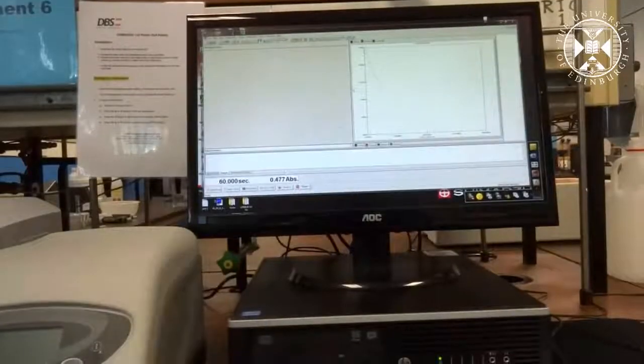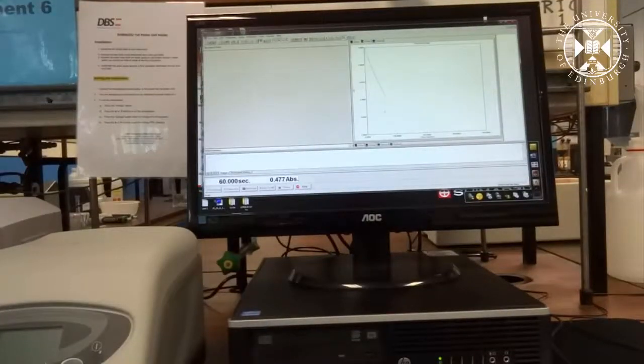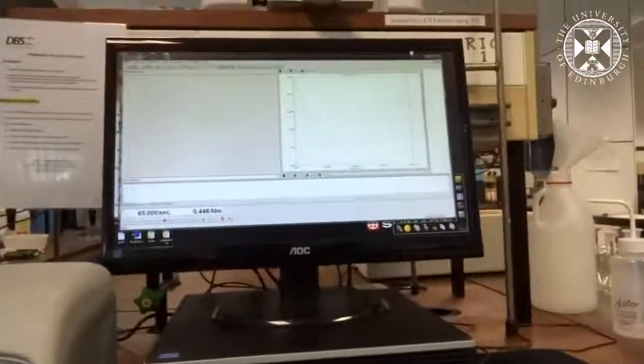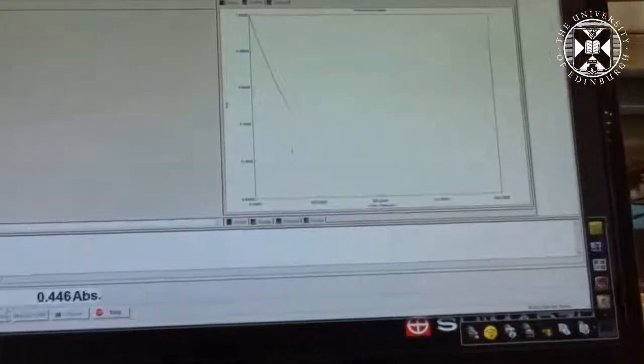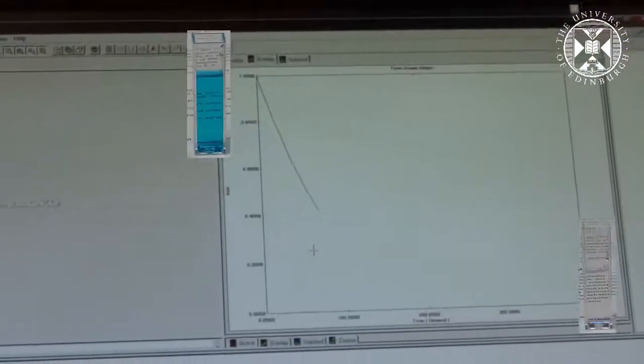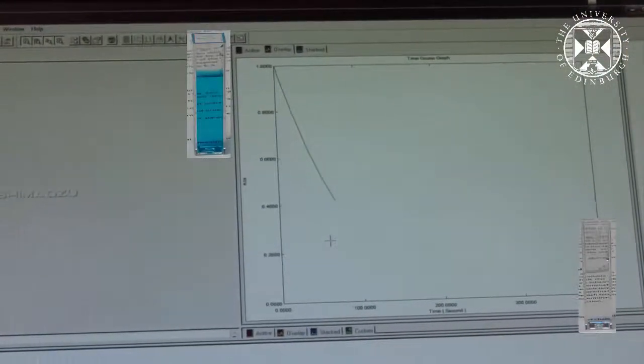You will notice the kinetic trace. This is monitoring the decrease in absorption and hence reflecting the change in concentration at the wavelength of maximum absorption over time as the malachite green is hydrolyzed to the carbonyl.